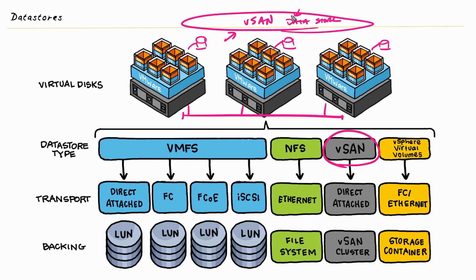And because this virtualized storage area network is reachable, and the data store is reachable by all of them, that means any one of these three ESXi hosts — with the VMs that it's supporting — could use this data store to house and be the home for the VM files.